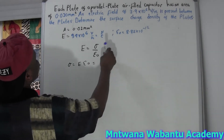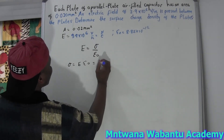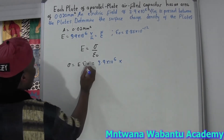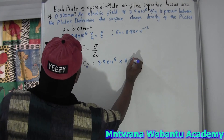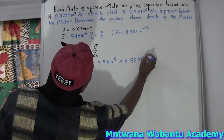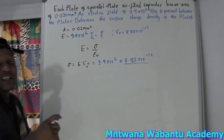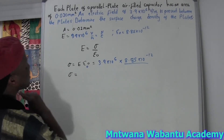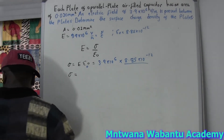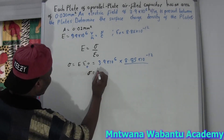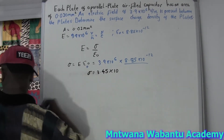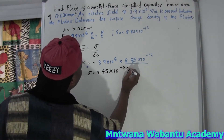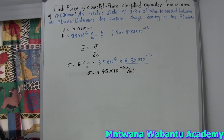Let's plug in the values. The electric field is given as 3.9 times 10 to the power of 6, and permittivity is always constant at 8.85 times 10 to the power of negative 12. Plugging into the calculator, surface charge density equals 3.45 times 10 to the power of negative 5 coulombs per meter squared.